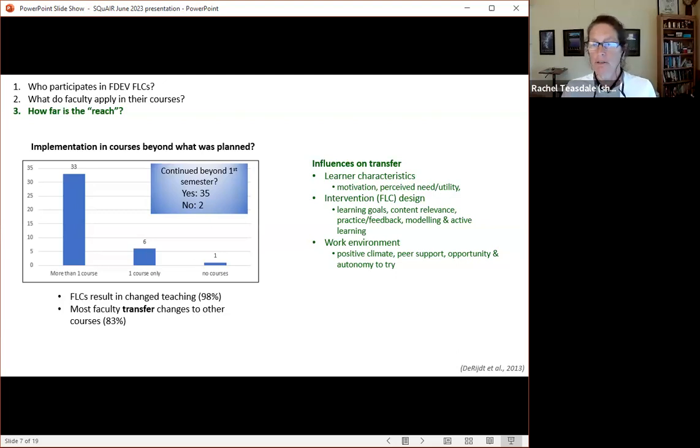So this idea of transfer is something that I've been interested in for a while. Some of the research talks about what the influences are on transfer. There's learner characteristics, the type of intervention, and then the environment into which implementation needs to take place. And so I think with this data, although the numbers are small, I think we're going to be able to integrate that with what the literature tells us about transfer and really be able to look at how we can modify what we're doing in our FLCs and reinforce things that are working and adopt new ways of encouraging this transfer.